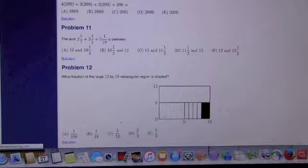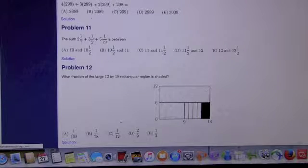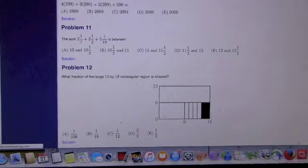So, let's see. We could first add up the non-fractional parts of the mixed numbers, so we could add up 2 plus 3 plus 5, and that's going to be 10. Okay. Now, we need to figure out what these fractional parts are going to be.